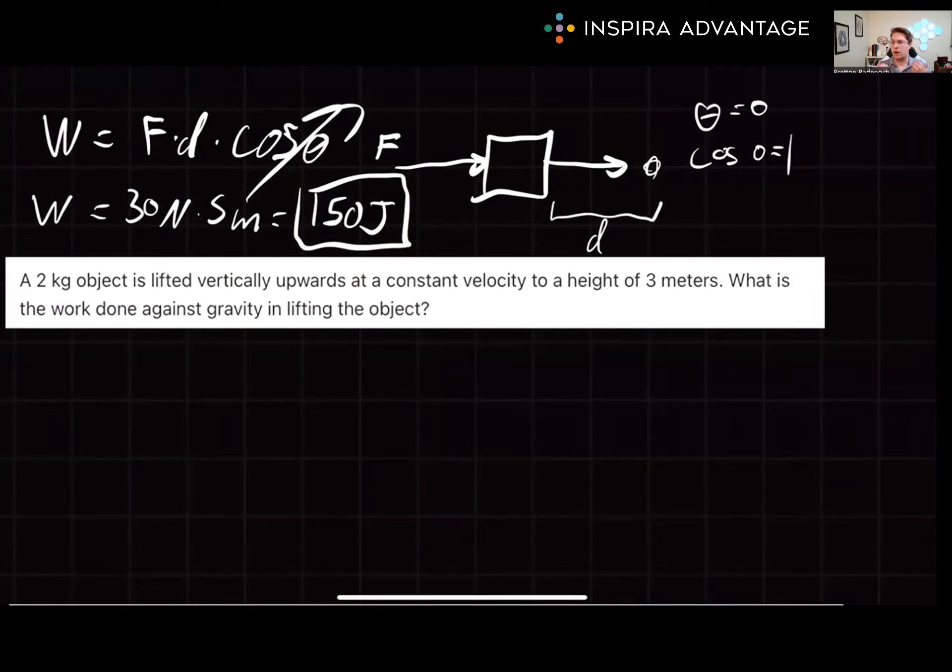First, what equation do we want to use here? We're lifting something vertically at a constant velocity. This makes me think of gravity—that's the force we're fighting against. So let's use force equals mass times gravity. We're going to assume we're on earth. If we plug in here, we have a mass of 2 kilograms and an acceleration of 10. So the force we're pulling with is 20 newtons.